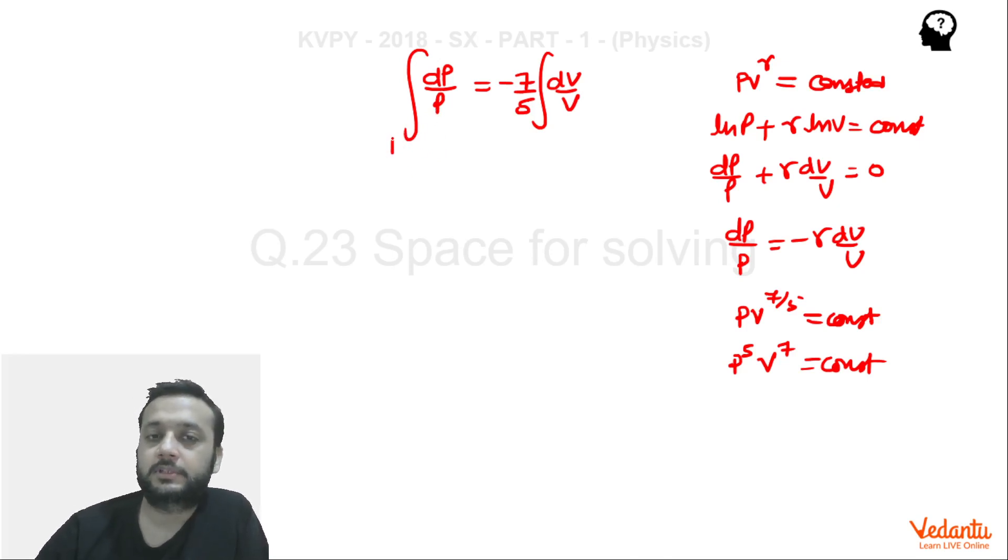If we integrate, we can integrate from P naught to P and initial volume V naught to V. So this will be ln of P/P₀ is equals to minus 7/5...